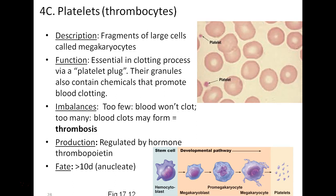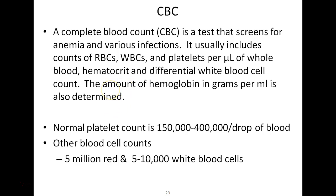A complete blood count (CBC) is used to test for anemia and various infections. It measures red blood cell counts, white blood cell counts, and platelets per milliliter of whole blood. In the lab we also look at hematocrit — the packed amount of red blood cells — along with normal platelet counts. That concludes part one of blood; part two will continue discussing the cardiovascular system with slides posted on Blackboard.